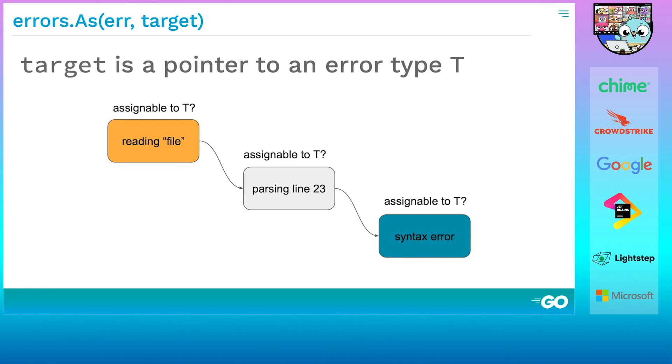The third function, errors.as, replaces type assertions and switches. It checks the type of each error in the chain until it finds a match. If it does find a match, it assigns it to target, its second argument. This function has caused a lot of confusion, so let's look at how you call it in more detail.